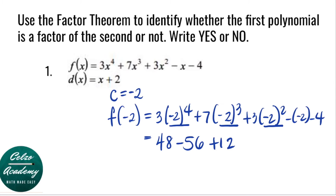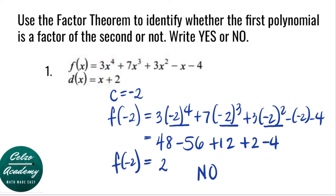Minus negative 2 is plus 2, and we have minus 4. Simplifying from left to right: 48 minus 56 is negative 8; negative 8 plus 12 is 4; 4 plus 2 is 6; 6 minus 4 is 2. So the value of f of negative 2 is equal to 2. Since the value is not equal to 0, this means that x plus 2 is not a factor of f of x.